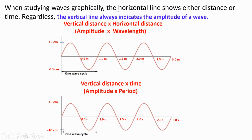When we study waves graphically, the horizontal lines show either distance or time. The vertical distance represents amplitude in both cases. In the first graph, the horizontal distance represents distance in meters, so you can determine the wavelength. In the second graph, the horizontal line shows time, not distance. Both graphs differ because even though the vertical line represents amplitude, the horizontal line represents different values — distance in one and time in the other.